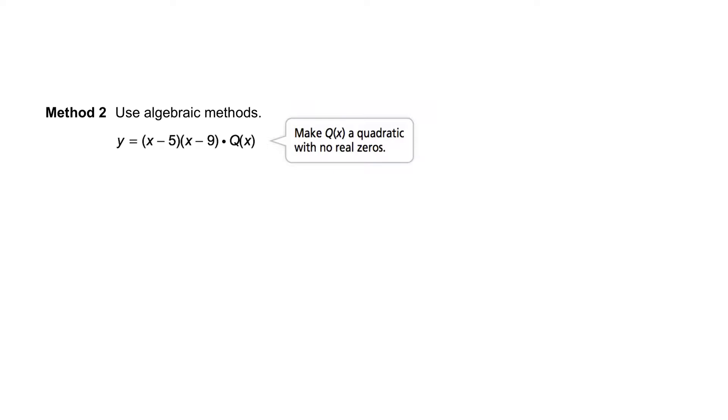We'll make q of x a quadratic with no real zeros. We can rewrite this as x minus 5 times x minus 9 times our quadratic q of x having no real zeros, x squared plus 1. Note its zeros would be complex.